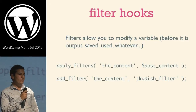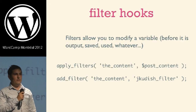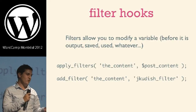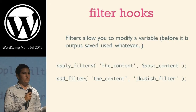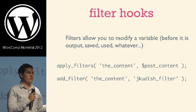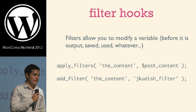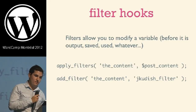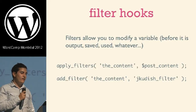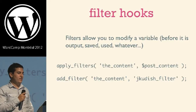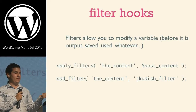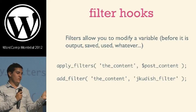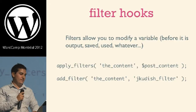Filter hooks allow you to modify a variable before it's output, saved, or used. A misconception I've sometimes heard is that filters are only for variables being output in a template — that's not true. You can filter a variable at any point in the code execution: before it's inserted into the database, before you use it in another function, whatever you want. It can be an array, a string, or an object. The syntax uses 'apply_filters', the name of the filter, and then the variable you're going to filter.